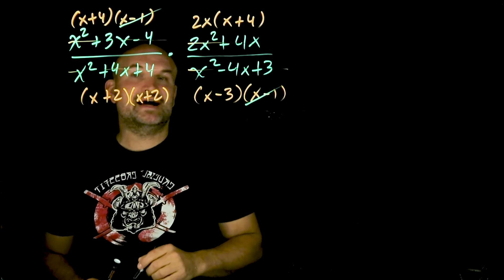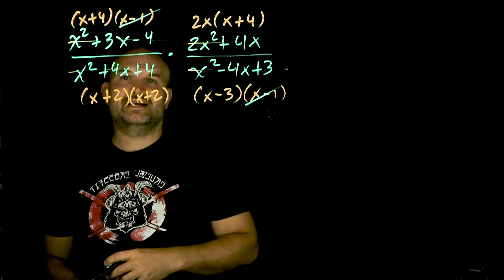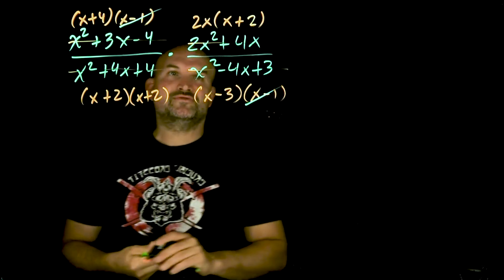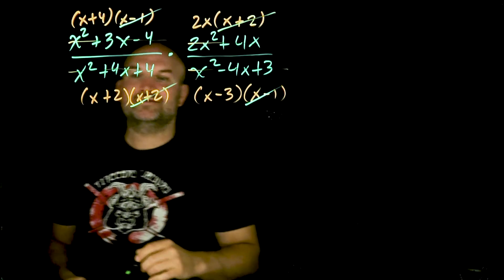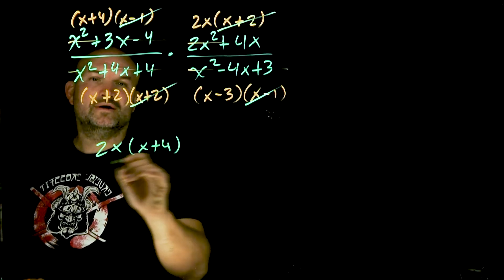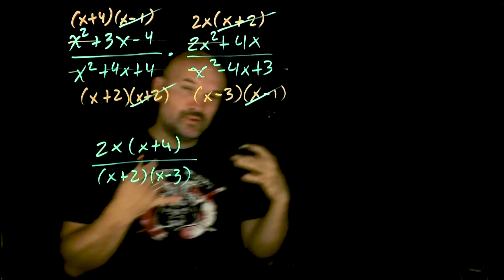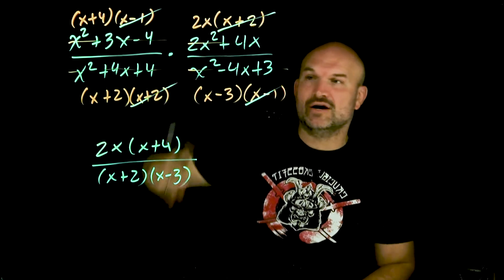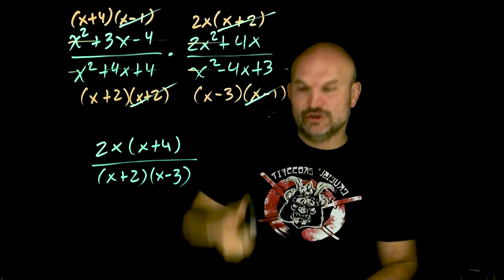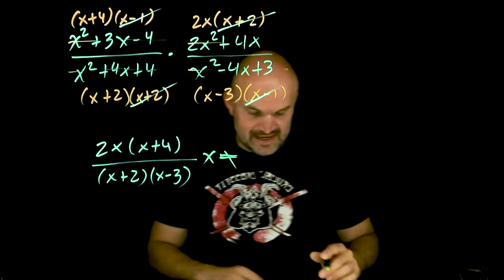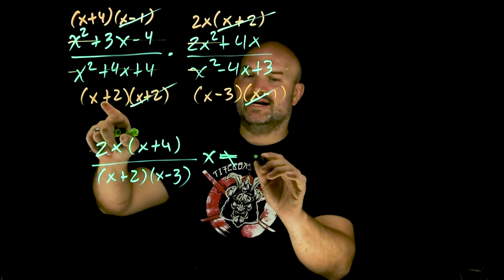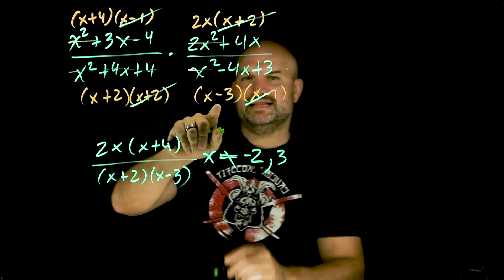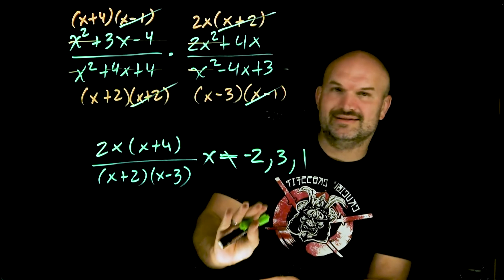Since everything is separated by multiplication, I look for matching terms to divide out. The (x minus 2)'s divide out, and one of the (x plus 2)'s divides out. The final answer is 2x times (x plus 4) divided by (x plus 2) times (x minus 3). For excluded values, going back to the original equation: x cannot equal negative 2 (appears with multiplicity), x cannot equal positive 3, and x cannot equal positive 1.